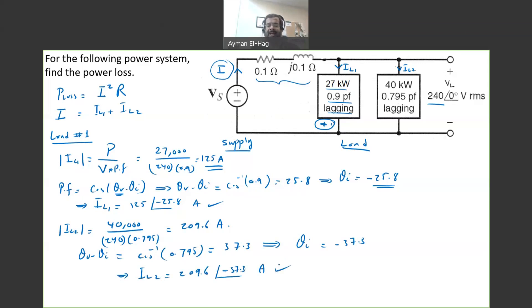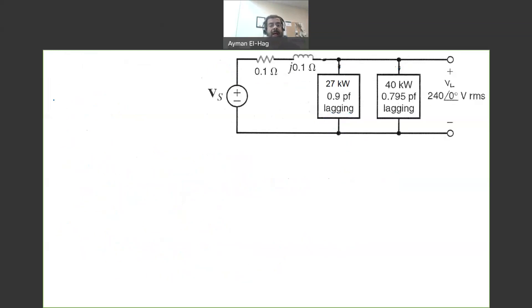And, this is your second current. Now, our problem is almost done. I want to find the main current that is coming from the supply. I want to find this I. So, your I is equal to IL1 plus IL2. So, it's equal to 125 angle of minus 25.8 plus IL2, which is 209.6 angle of minus 37.3.